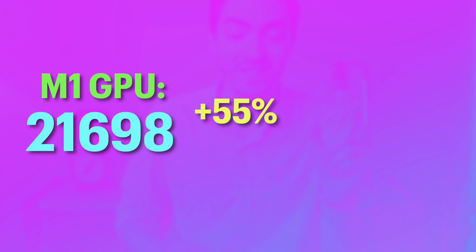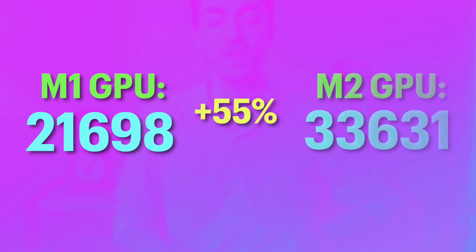The M1 GPU scores around 21,698 in Geekbench 5 Metal Compute. If we bump that up 55%, it would score 33,631, which puts it pretty close to the Radeon Pro 575 that used to ship in iMacs a couple of years ago. That's an older GPU, not a high-end one, but we're talking about integrated graphics that would be found in something like a base model Mac Mini.